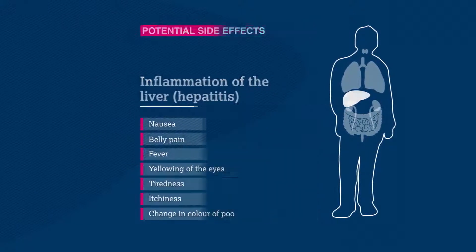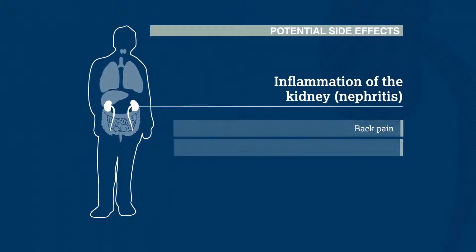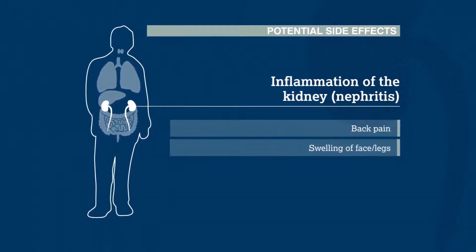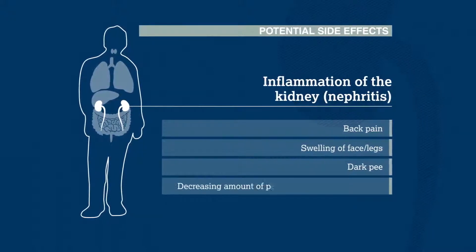If the kidneys are involved, patients may have back pain and swelling of their face or legs. They may also notice that their pee is much darker than usual, or that they're peeing more frequently.